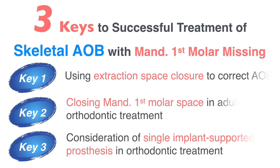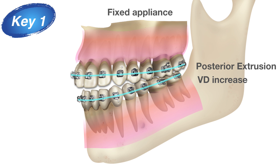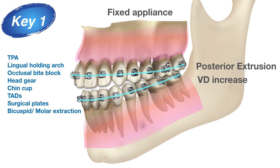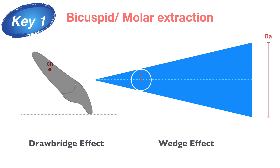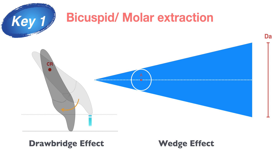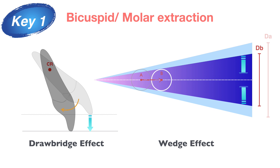There are three keys to the successful treatment of skeletal anterior open bite with a missing lower first molar. Key number one: we used a fixed implant to treat the anterior open bite, which typically extrudes the posterior teeth and increases the vertical dimension. There are many ways to prevent this side effect. Bicuspid molar extrusion is one of them — it can generate two effects: first, the joint bridge effect, which retroinlines adjacent teeth and leads to relative extrusion; and second, the wedge effect, where moving posterior teeth forward from A to B changes the point of contact and reduces the anterior open bite.